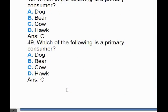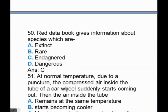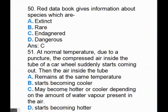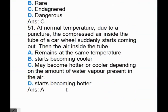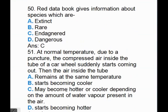A red data book gives information about species which are endangered. At normal temperature, due to a puncture, the compressed air inside the tube of a car wheel suddenly starts coming out. Then the air inside the tube remains at the same temperature.